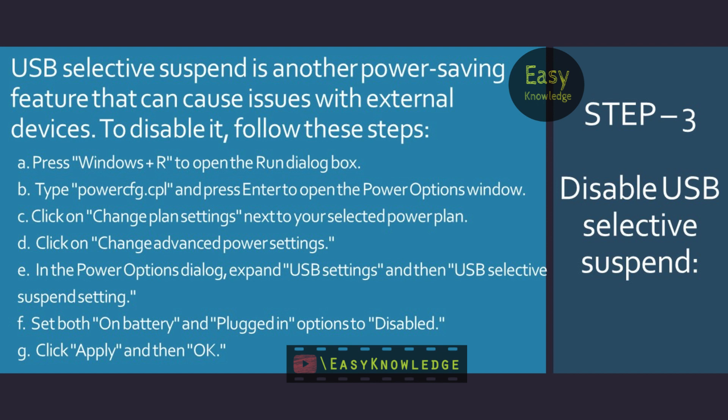Type PowerCoff.CPL and press Enter to open the Power Options window. Click on Change Plan Settings next to your selected power plan, then click on Change Advanced Power Settings. In the Power Options dialog, expand USB Settings and then USB Selective Suspend setting. Set both On Battery and Plugged-in options to Disabled. Click Apply and then OK.